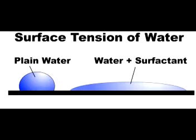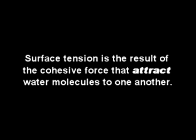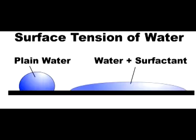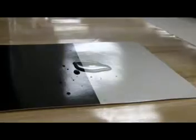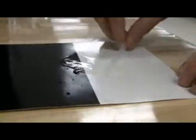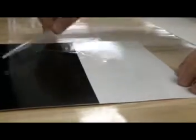Water by itself is not a good cleaning product because it has a high surface tension. The surface tension of water is caused by the attraction of water molecules to each other, just as a magnet is attracted to metal. The chemist uses a special compound called a surfactant, or surface active agent, to lower the surface tension of water — or in layman's terms, makes water wetter.